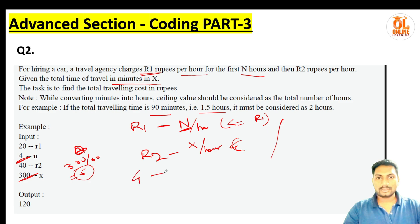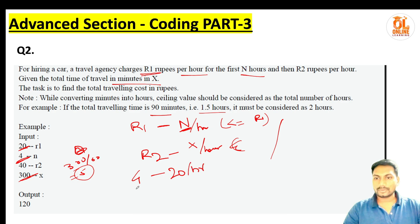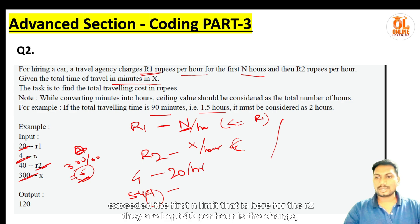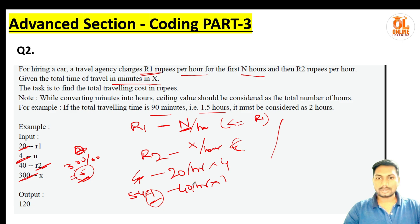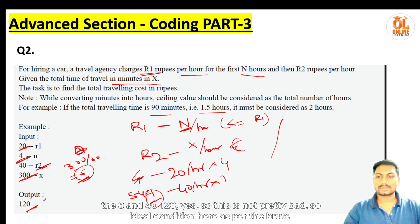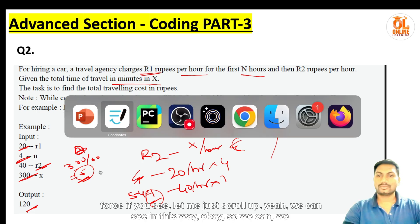So for 5 hours total with n=4: the first 4 hours cost 4 × 20 = 80 rupees, and the extra 1 hour costs 1 × 40 = 40 rupees, giving a total of 120 rupees. That matches the expected output.